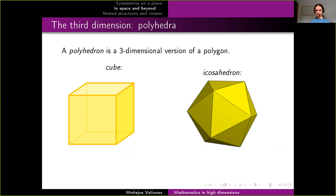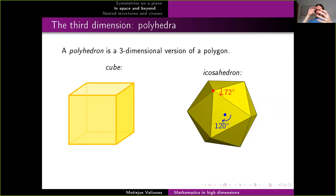Another example of a polyhedron is the icosahedron, which is a bit more complicated — it has 20 triangular faces arranged symmetrically. It also has various symmetries: you can pick two triangular faces and rotate around them by 120 degrees, one-third of a full turn, and get back what you started with. Or you can pick two opposite vertices and rotate by one-fifth of a turn — 72 degrees — and again you have the same thing.